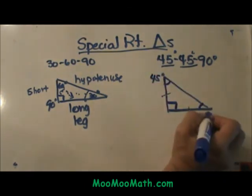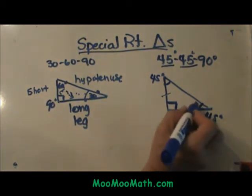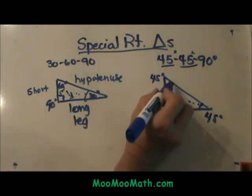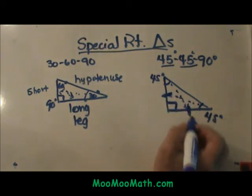So this angle is 45 and this angle is 45. Since these two angles are congruent, the sides, or in this case also the legs, are also congruent because the angles are congruent.